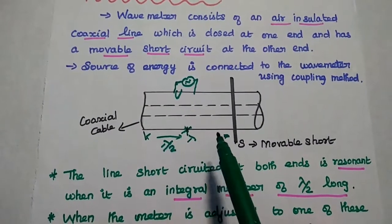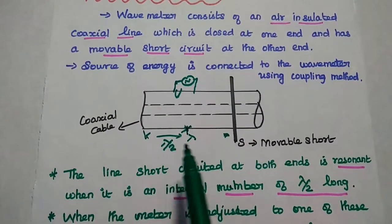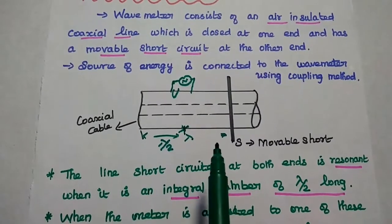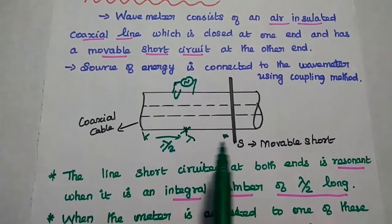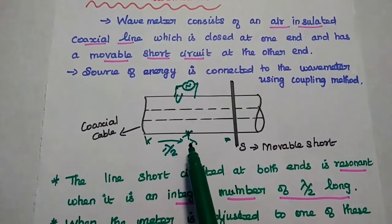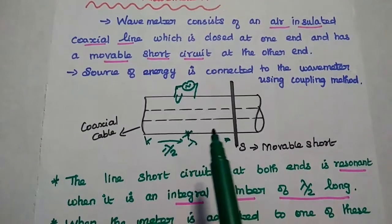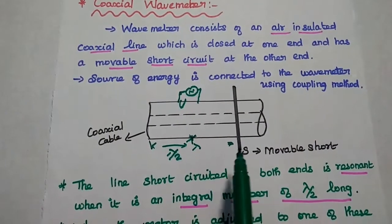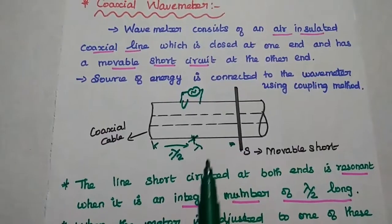The line short-circuited at both ends is resonant when it is an integral multiple of lambda by 2 long. Resonant means there is a maximum voltage produced. We can get only the maximum voltage at the resonant condition.